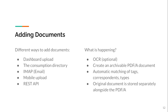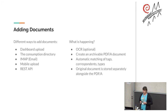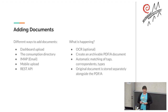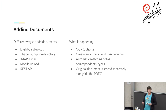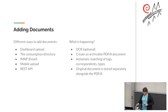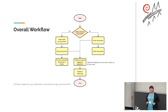When Paperless gets a PDF: if it's not already text, it runs OCR to detect the text. It creates an archivable PDF/A document — this is great for long-term storage, you can store documents for 20 or 30 years. It then performs automatic matching of tags, correspondents, and types, and stores everything on the server. The PDF/A is stored alongside your original document — the original is never modified by OCR.